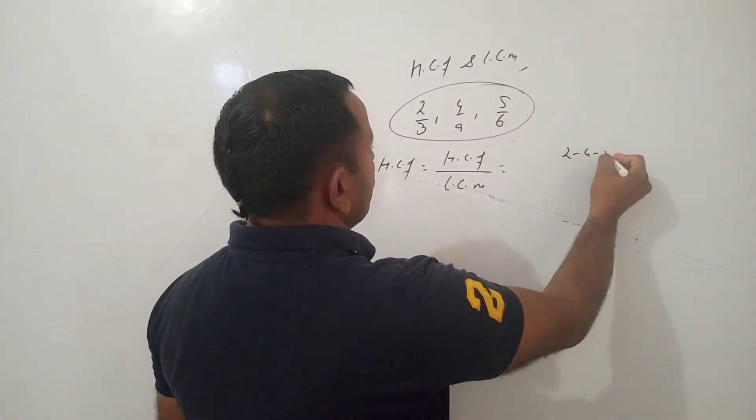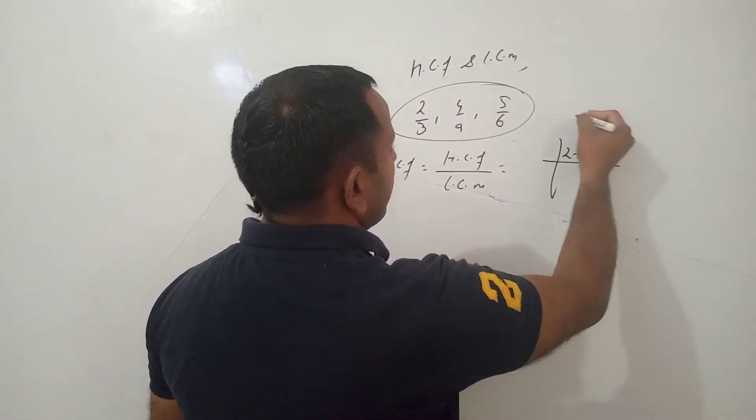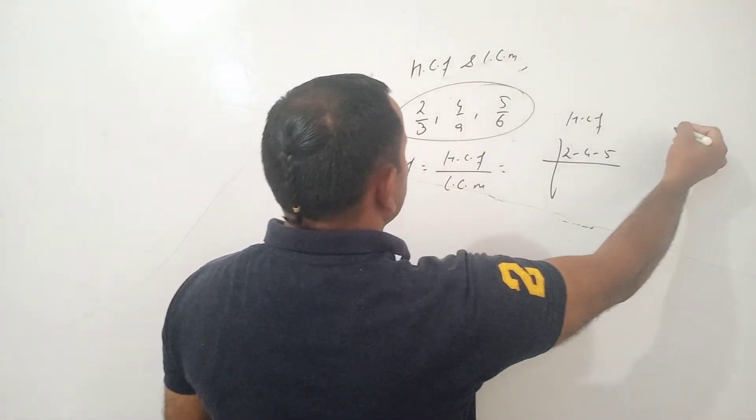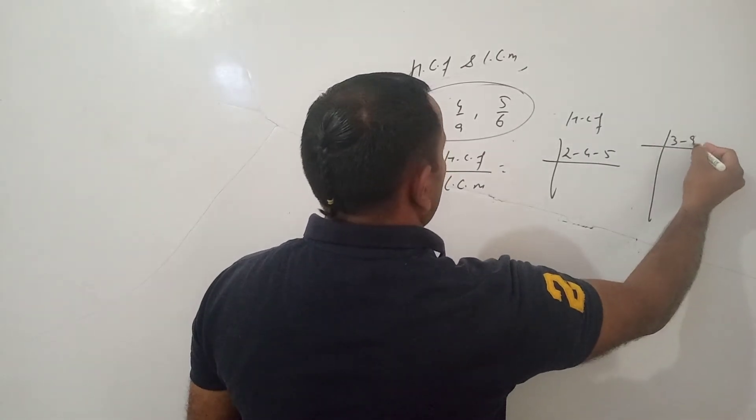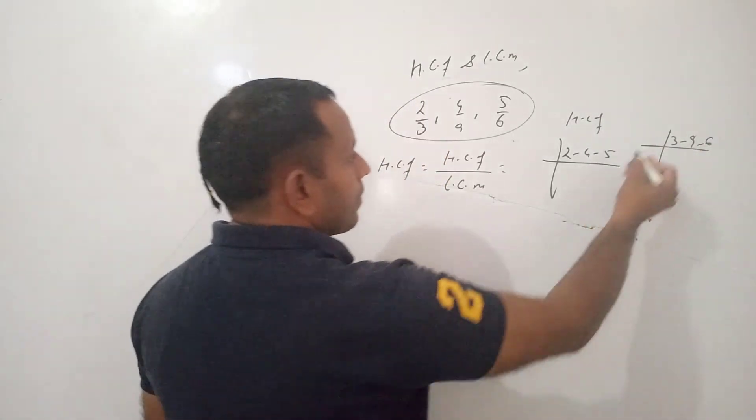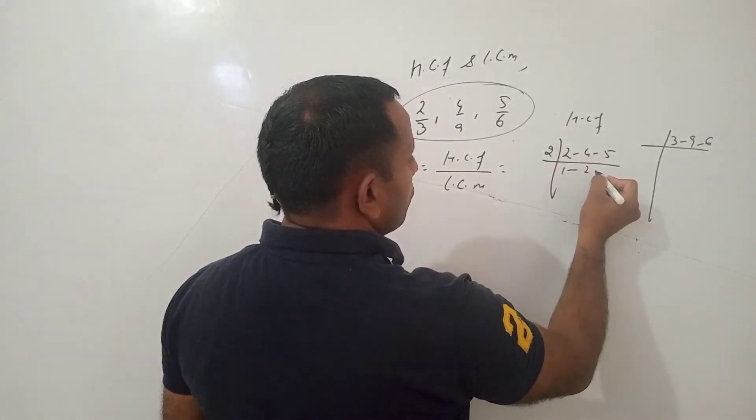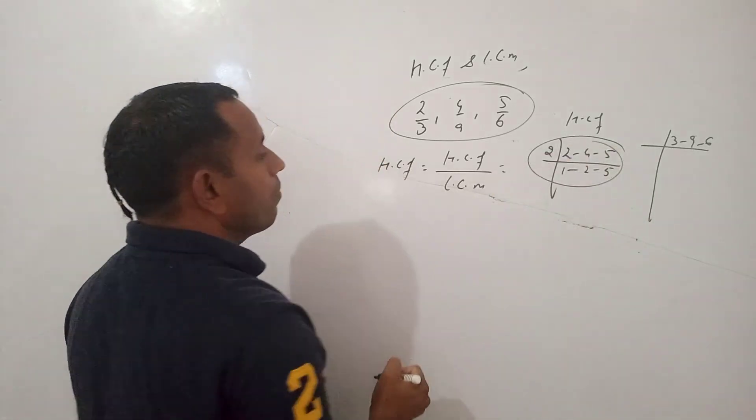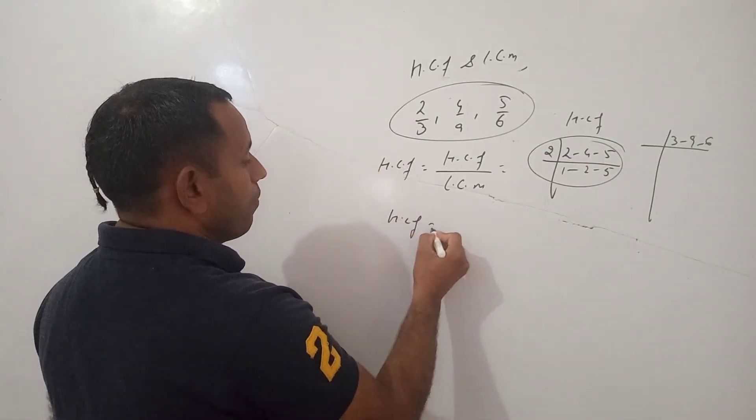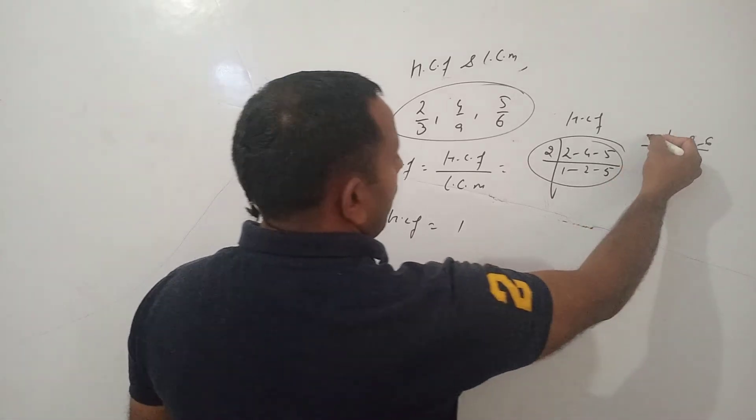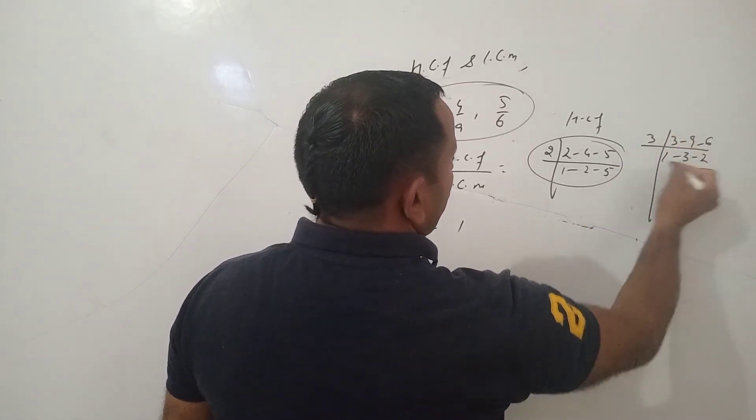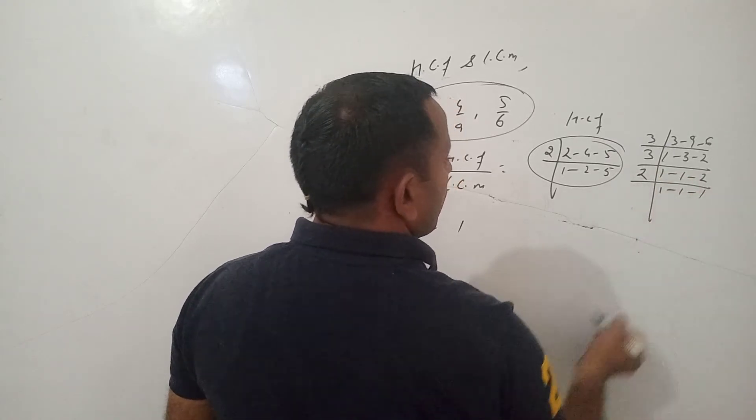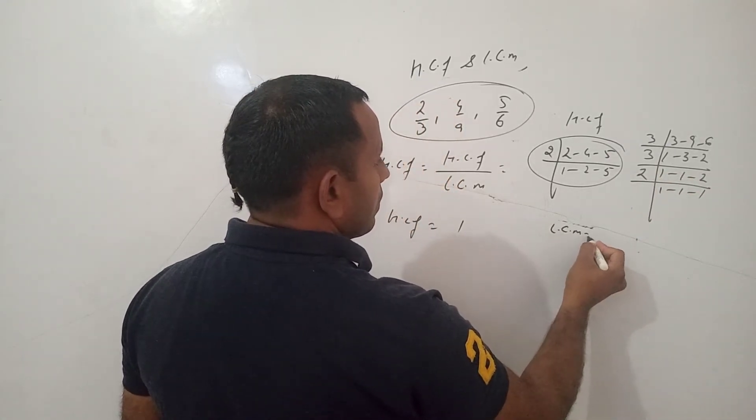So find out the HCF of 2 and 4 and 5, and LCM of 3, 9 and 6. So 2, 1, 2, 2, 2, 2, 4 and 5 is remaining. So the HCF is 1 and LCM, so the LCM is 3 into 3 into 2 that is 18. So the HCF of this number.